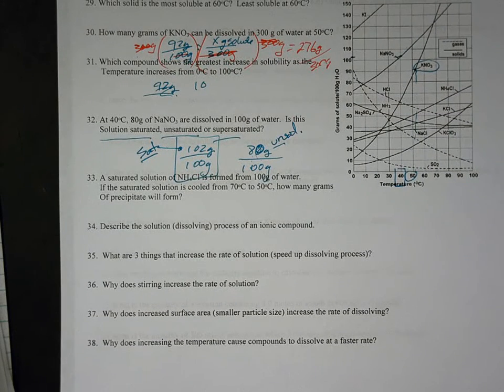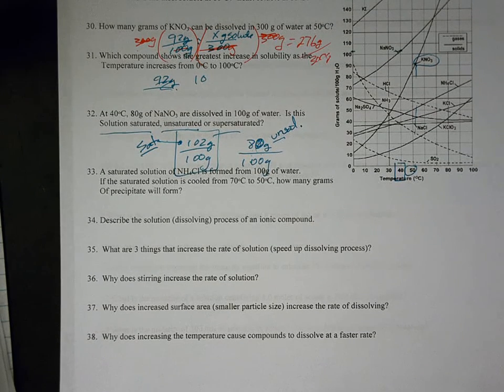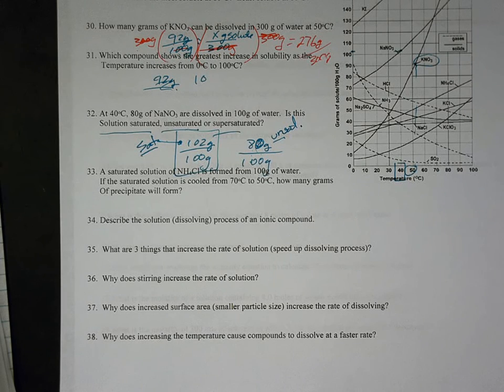Describe the solution dissolving process of an ionic compound. Ionic compounds are very polar. They can dissolve very easily in water. I'm going to stop it there because we're out of time.